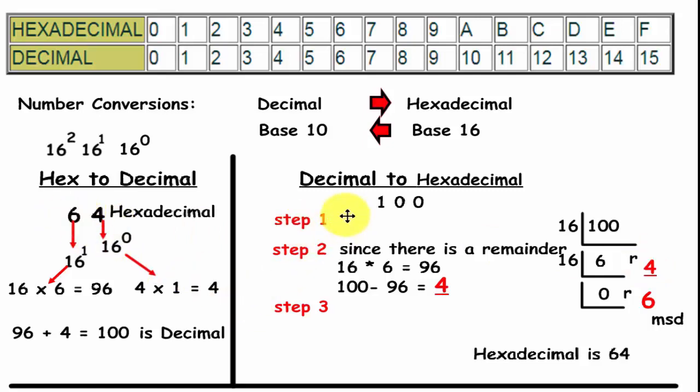Very quickly again, let's look at this. Step 1. Divide the number, the decimal number by 16. How many times does 16 go into that number? 6 times. Now, subtract the remainder, which in this case is a 4, which is 100 minus 96. How many times does 16 go into 6? 0 times with a remainder of 6. So your number, the most significant digit is 6. So your number here is 64, just like it shows you right here.